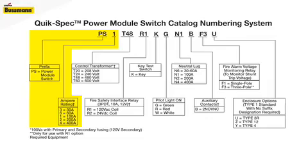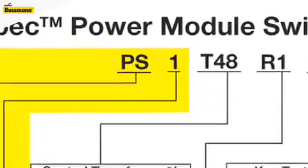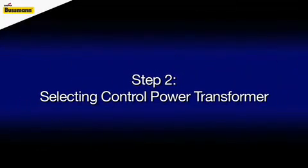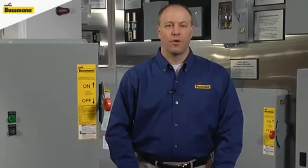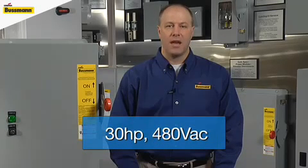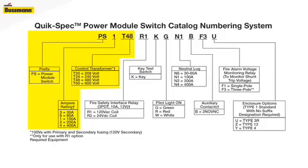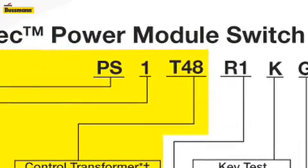The correct selection in step one of building a part number for the power module switch would be PS1. The second step in the process is the selection of the proper control power transformer. Continuing with our 30 horsepower rated 480 volts AC example, the correct choice would be a T48, which stands for a 480 volt AC incoming service.